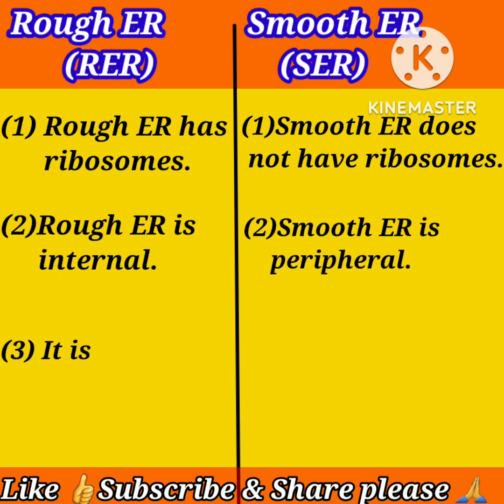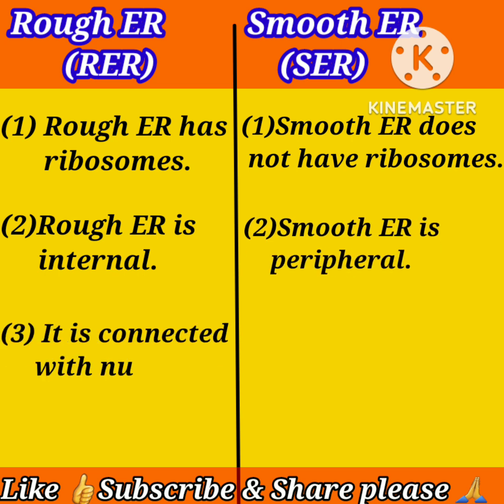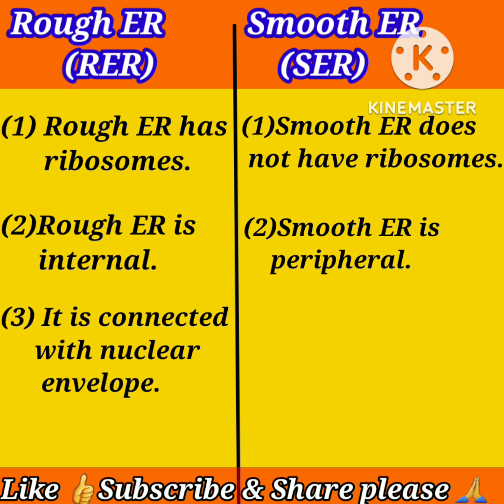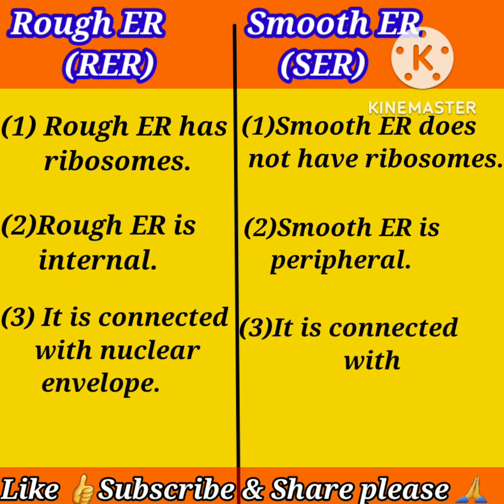Third difference: rough endoplasmic reticulum is connected with the nuclear envelope, while smooth endoplasmic reticulum is connected with the plasmalemma.